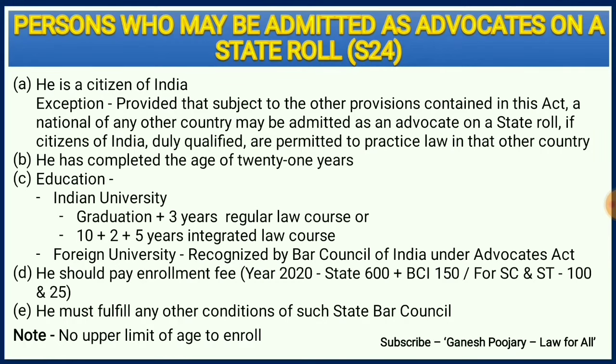Section 24 of the Advocates Act 1961 discusses persons who may be admitted as advocates on a state roll. There are five important provisions, and when one completes all five requirements, he can be admitted on the state roll.